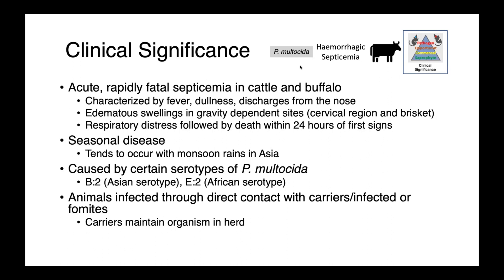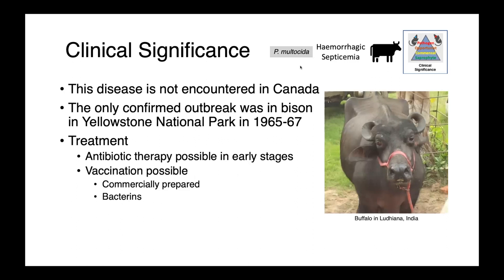In North America, we do not have these particular strains, and hemorrhagic septicemia would be considered a foreign animal disease. The only confirmed outbreak in North America was in Yellowstone National Park in the mid-1960s. Animals are infected through direct contact with carriers or through infected fomites, such as a shared water supply. Treatment with antimicrobials is possible if caught early enough, and vaccinations — either commercially prepared or autogenous bacterins — are also commonly used.